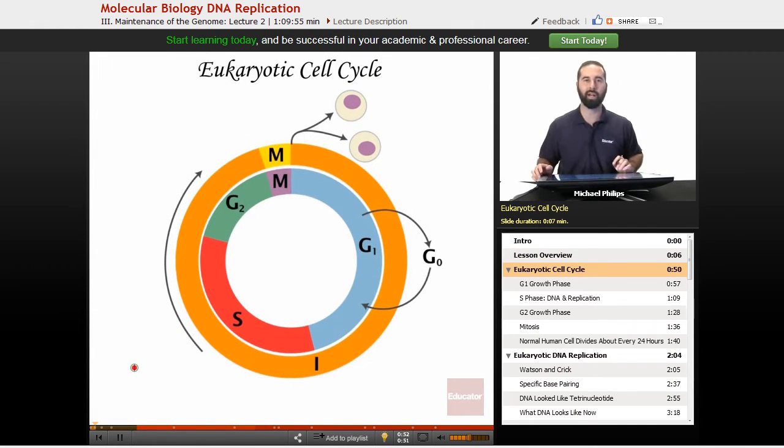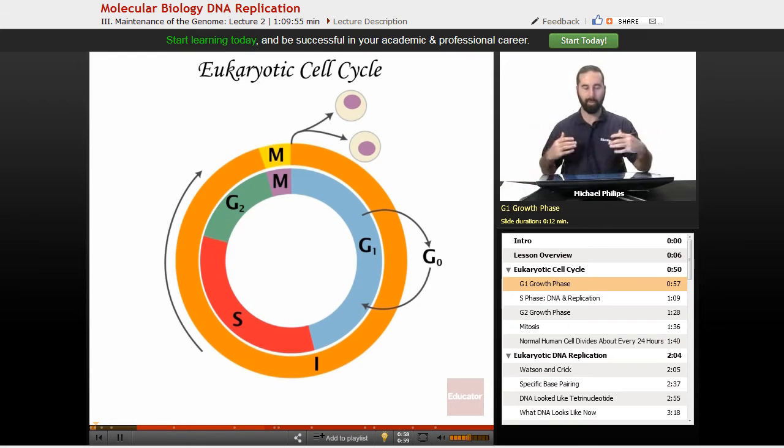So the eukaryotic cell cycle, once again. G1, remember that's just our growth phase, that's going to be about 9 to 11 hours long.